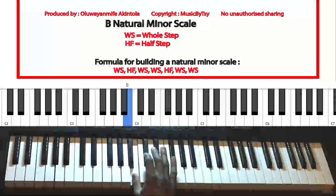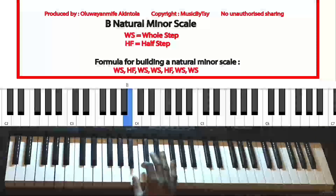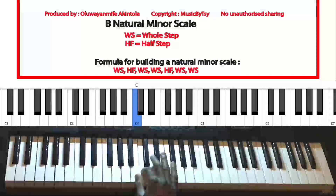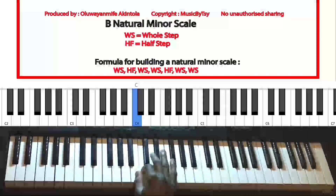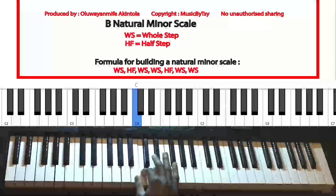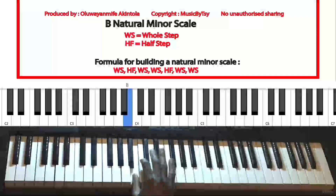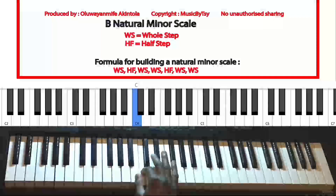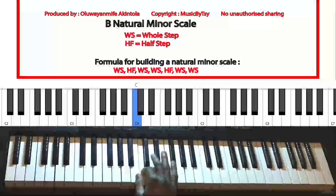Just to remind you — whenever you move from one key to the next key without skipping any key, that is known as moving by a half step. For example, if I move from the key of B to the key of C, I've not skipped any key — I've moved from one key to the next key. That means I've moved by a half step.